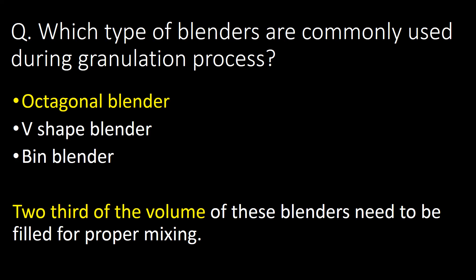Which types of blenders are commonly used during the granulation process? Commonly used blender types are the octagonal blender, V-shape blender, and bin blender. Two-thirds of the volume of these blenders needs to be filled for proper mixing.